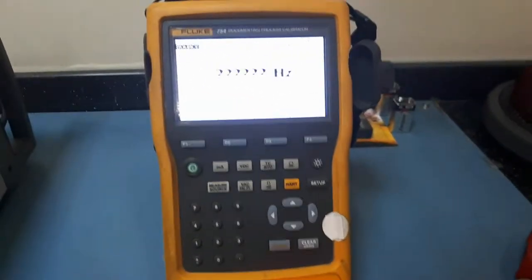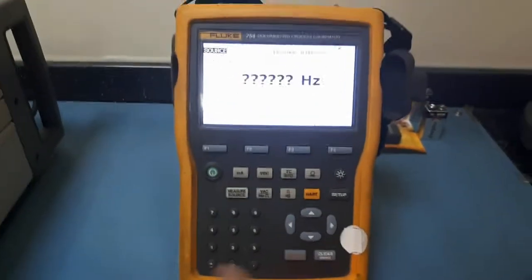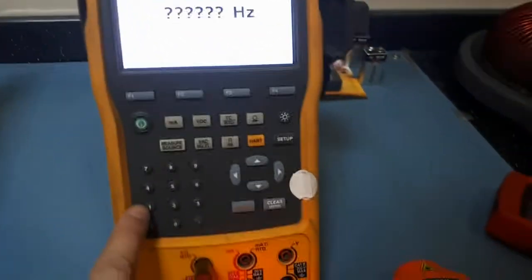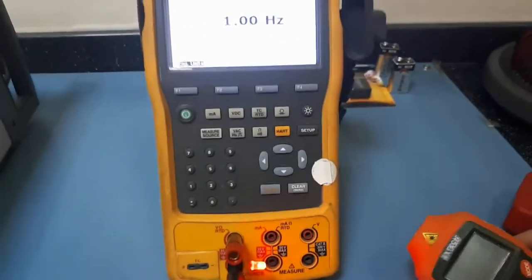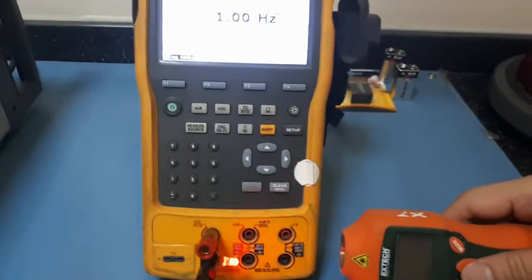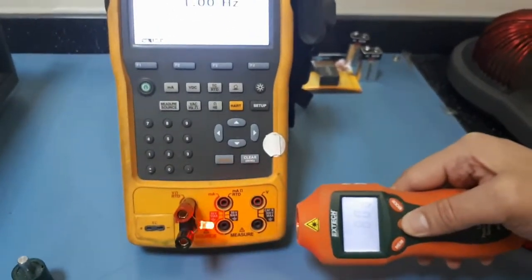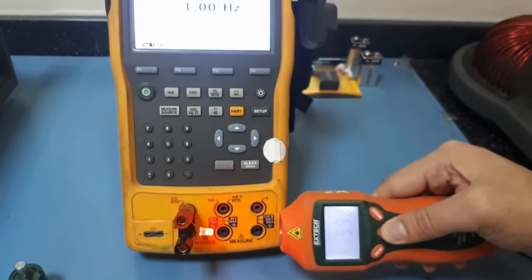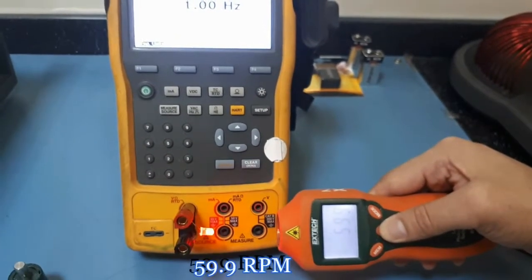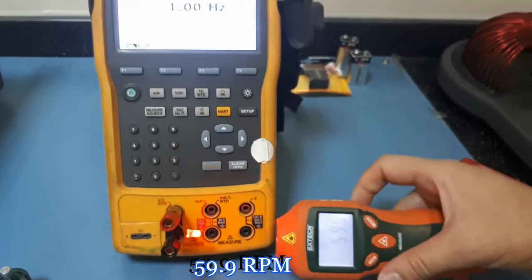And we will start at frequency. 1 hertz is equal to 60 rpm. So we will check 1 hertz. Enter. It's blinking. And compare. Expected, it's 60 rpm. Check. There. It's 59.9 rpm. It's good.